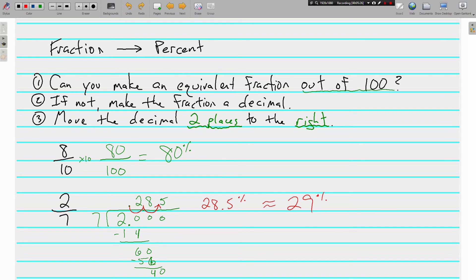but we're going to round it to the nearest percent. That's going to round up to 29 percent. That's what I do with your grades. If you get 28.5 percent, we round it up to 29 percent. So that's fractions to percents. Can you make an equivalent fraction out of 100? If not, do the division and move that decimal point two places to the right.